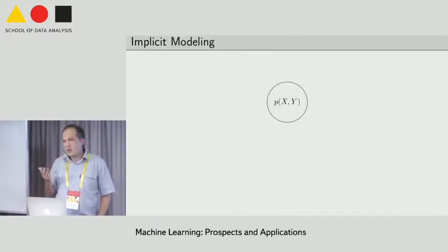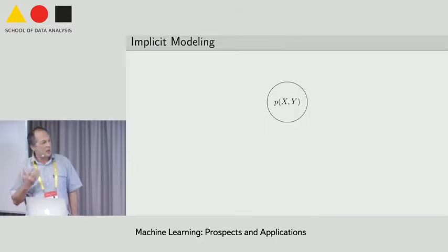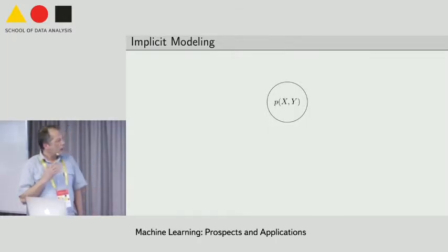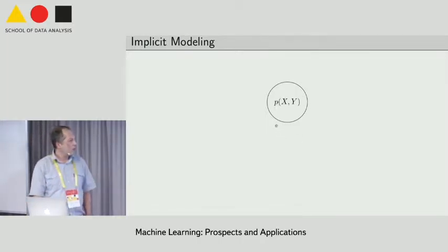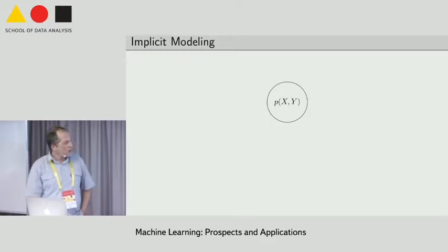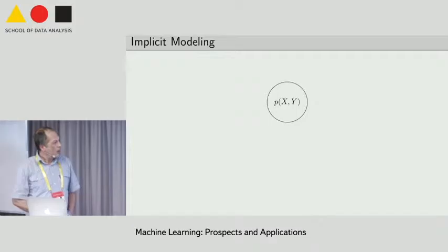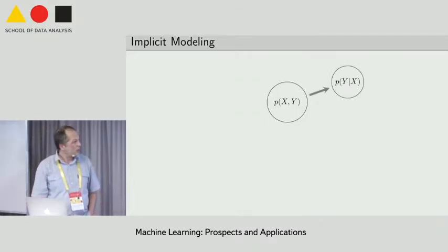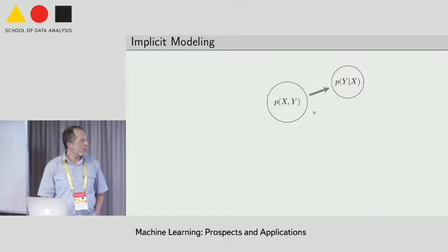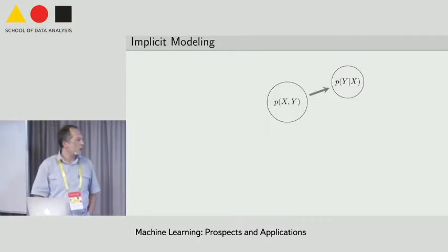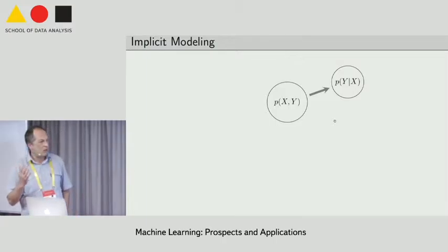Let me present a sketch where the relation between generative and discriminative models is more or less explicitly drawn. Imagine we have some family of joint probability distributions — one point in this circle is just one probability distribution. In generative learning, we search for one point inside this set, for instance according to maximum likelihood. Let's also imagine a family of all posterior conditional probability distributions that can be derived from this family. For each joint there exists one conditional, so there is a mapping and a corresponding family for the posterior probability distribution.